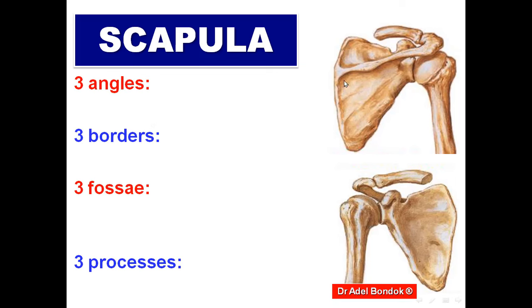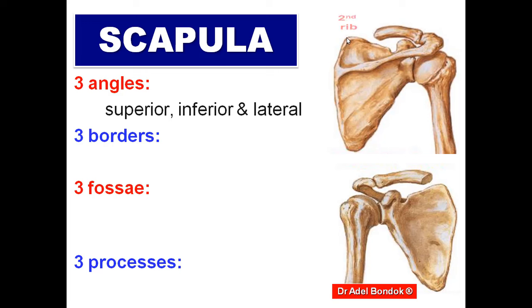The scapula has three angles, three borders, three fossae, and three processes. The three angles are: the superior angle, lying opposite the second rib; the inferior angle, lying opposite the seventh rib; and the lateral angle, which has three features — the glenoid cavity, which articulates with the head of the humerus to form the shoulder joint, and two tubercles: the supraglenoid tubercle and the infraglenoid tubercle, for muscle attachment.